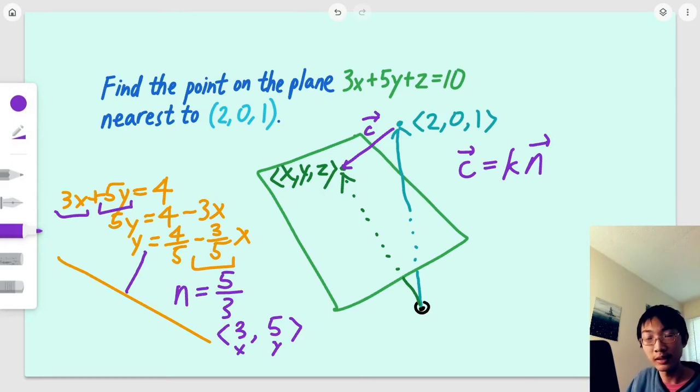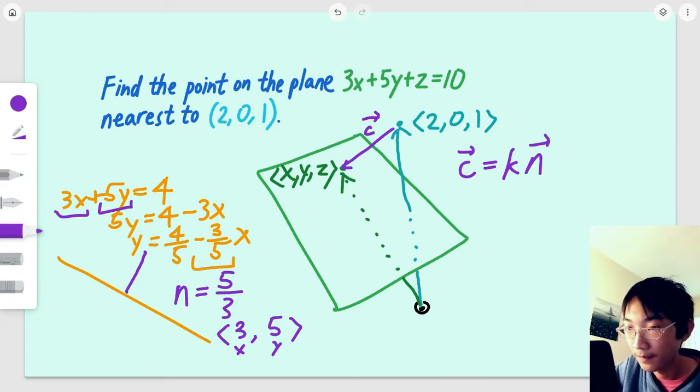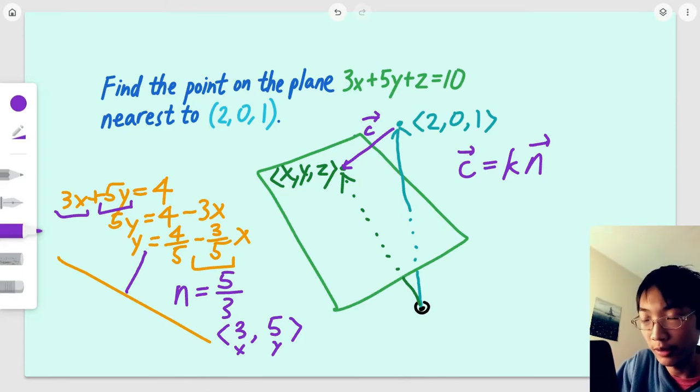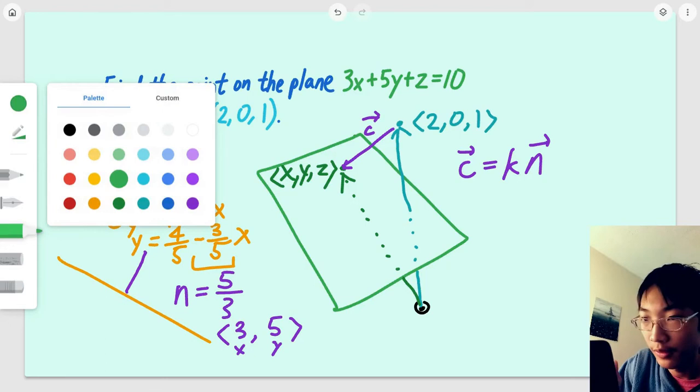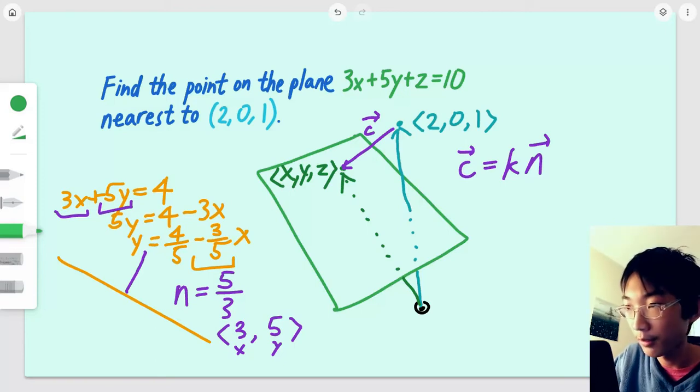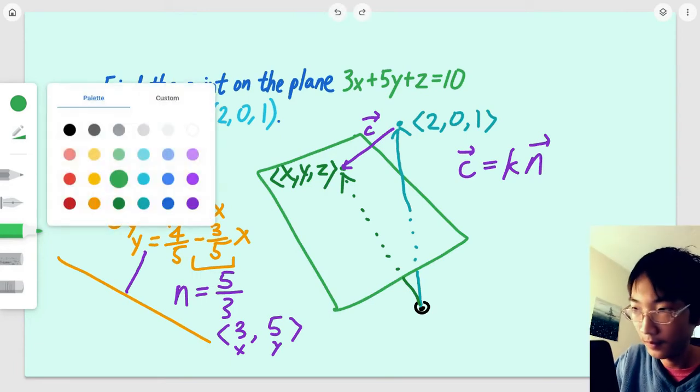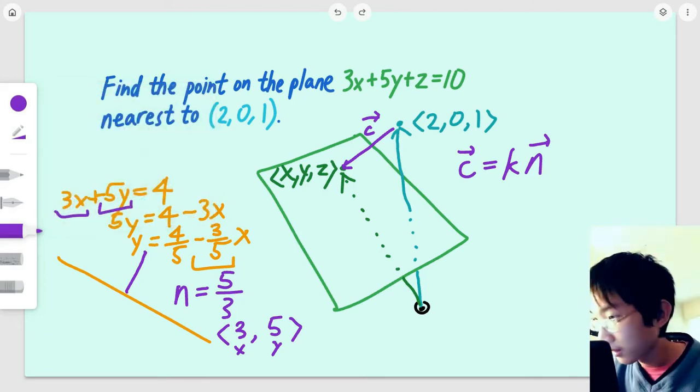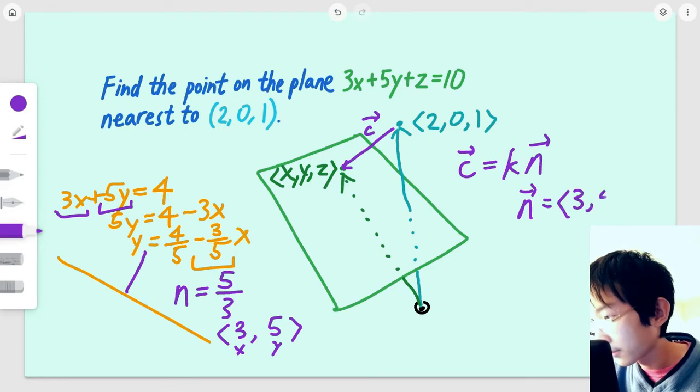That is actually an interesting property that applies to both 2D and 3D. Although this method is less rigorous, it's a very quick way to find out the normal vector of a line in 2D or a plane in 3D, just by looking at the standard form of the plane or the line. So, in this case, our normal vector for our plane will be (3, 5, 1).